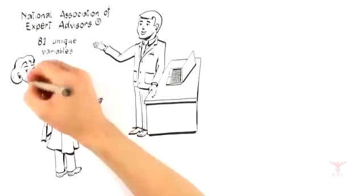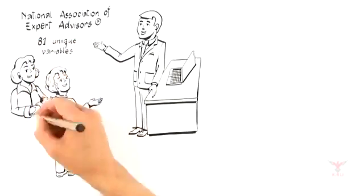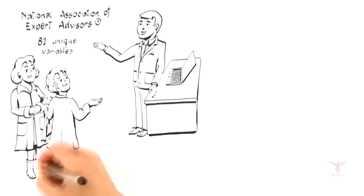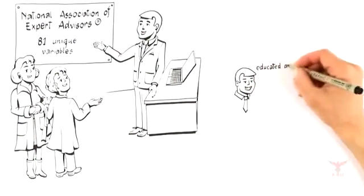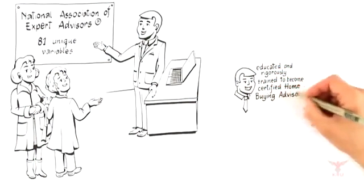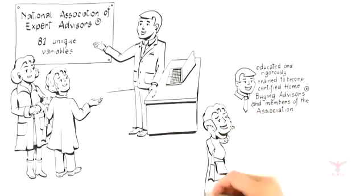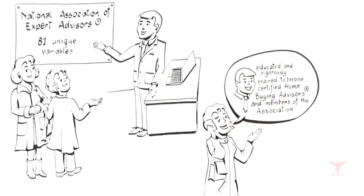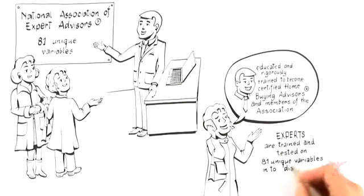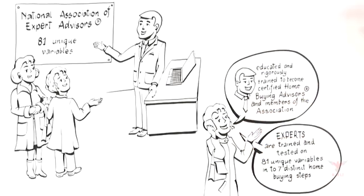Members of this organization are educated beyond your average agent. These professionals rigorously train to become certified home buying advisors and members of the association by demonstrating their mastery of the home buying process. These experts are trained and tested to follow a proven, repeatable home buying system that categorizes the 81 unique variables into 7 distinct home buying steps to give you an unfair competitive advantage in today's new real estate economy.